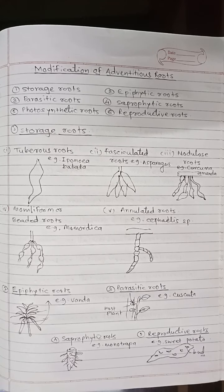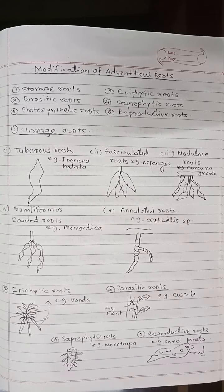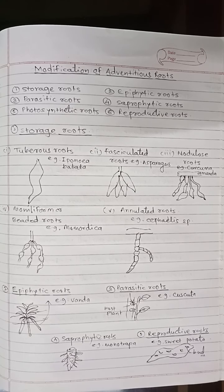The last type is reproductive roots. Some fleshy adventitious roots develop buds which can grow into new plants. These are called reproductive roots. These roots serve as means of vegetative propagation or vegetative reproduction. Examples are sweet potato and Dahlia. These roots are also called tuberous roots, and they are also reproductive roots.